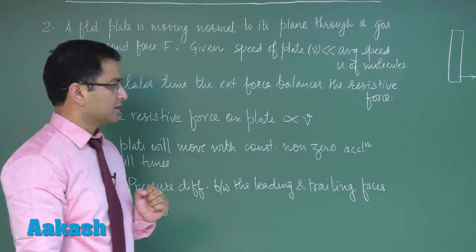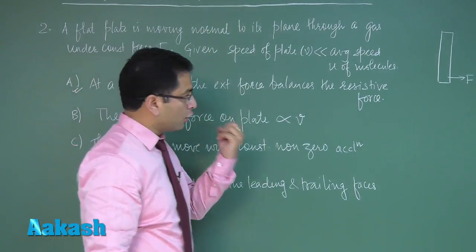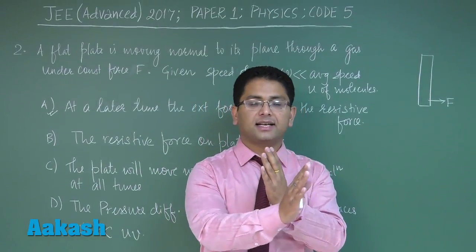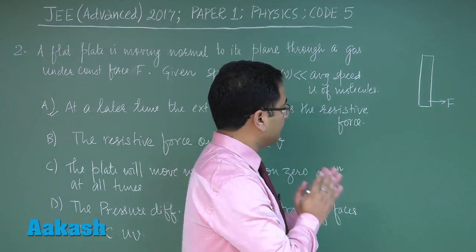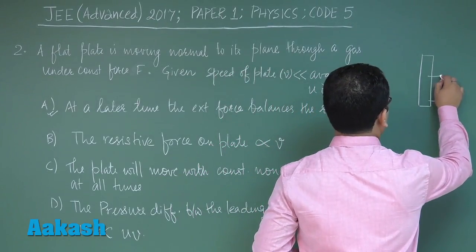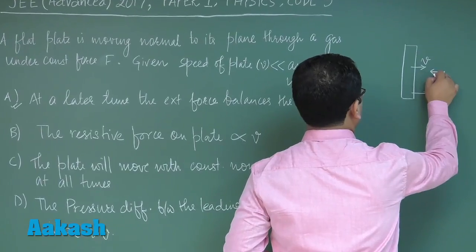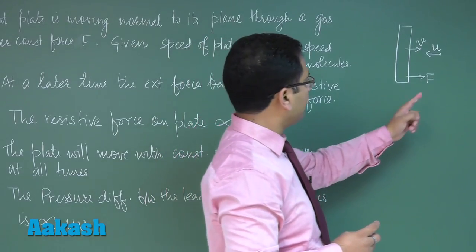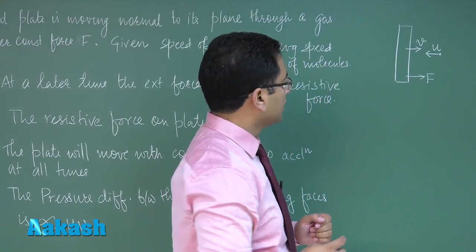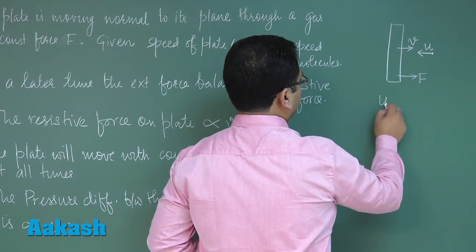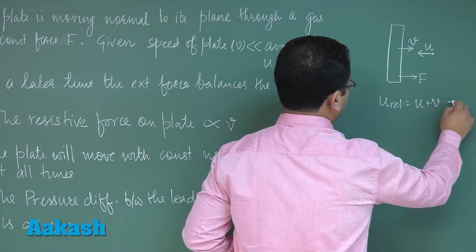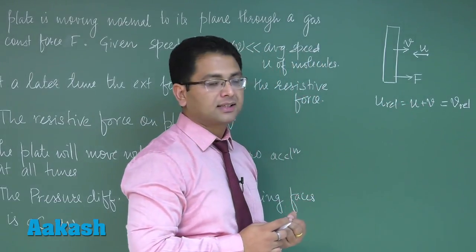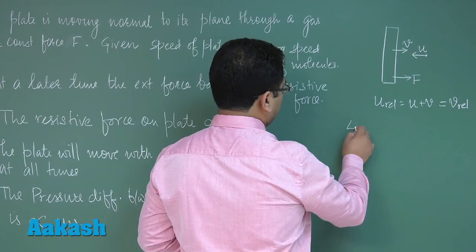The resistive force on plate is directly proportional to V. Now that requires calculation. Resistive force ka jo cause of origin hai wo hai momentum transferred by the gas molecule due to collision on the front side as well as on the back side. Now this requires a very detailed solution. Here this speed is given to be V and here this is U. Now let's try to see how much is the change in momentum of the gas molecule due to collision. Quite obviously, elastic collision hai, so initial relative velocity U plus V hai, so the same thing is the final relative velocity of the gas molecule due to collision because of the concept of elastic collision.